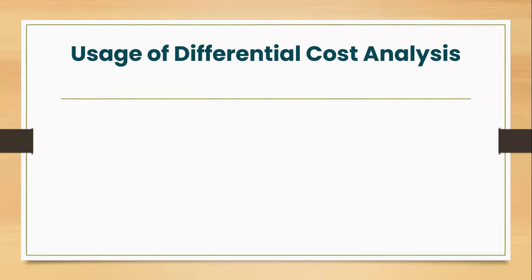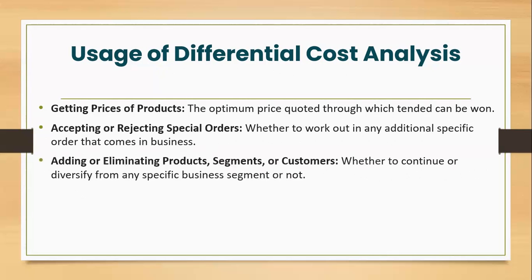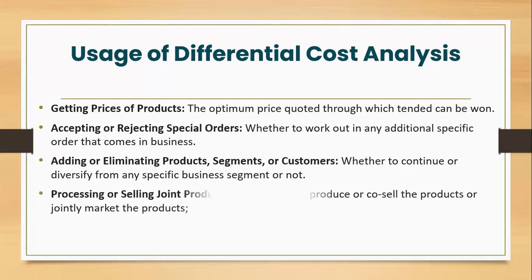Coming to the last concept of usage or application of differential cost analysis. Differential cost analysis is used in getting prices of products. The optimum price to be quoted through which tender can be won is one of the main usage of differential cost analysis. Accepting or rejecting special orders, whether to work out additional specific orders that come into the business can be accepted or not. Next, adding or eliminating products, segments or customers, whether to continue or diversify from any specific business segment or not, can be decided using differential cost analysis.